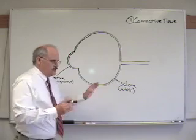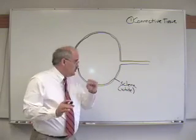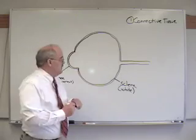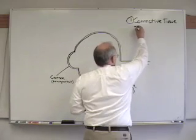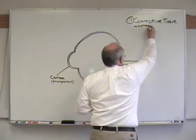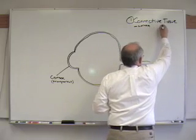Now, where the sclera is, there's a term here, those are the two components of the connective tissue layer. The two components are in the front of the eye, the cornea, and in the back of the eye, the sclera.